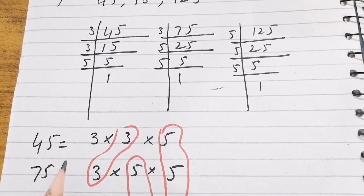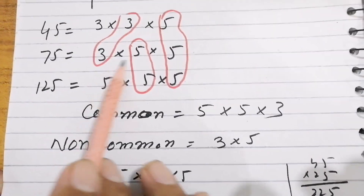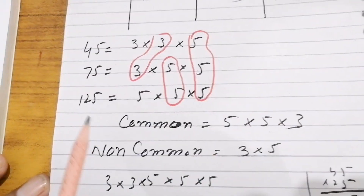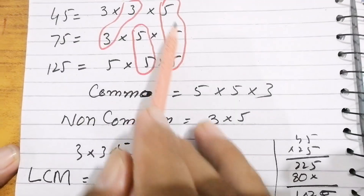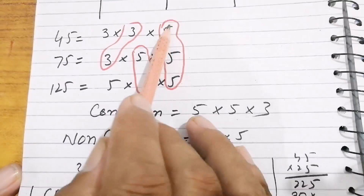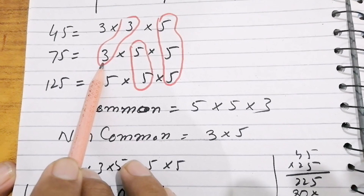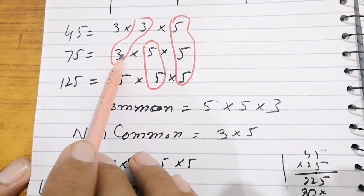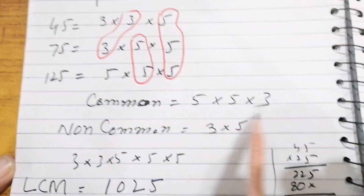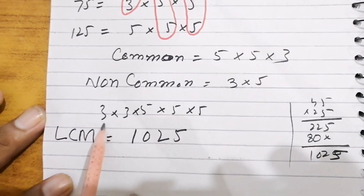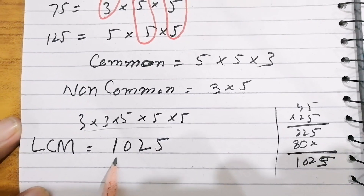Factors of 45 are 3×3×5, factors of 75 are 3×5×5, and factors of 125 are 5×5×5. We write the common numbers first, then the non-common numbers, and multiply all together to get the LCM. So the LCM is 1125.